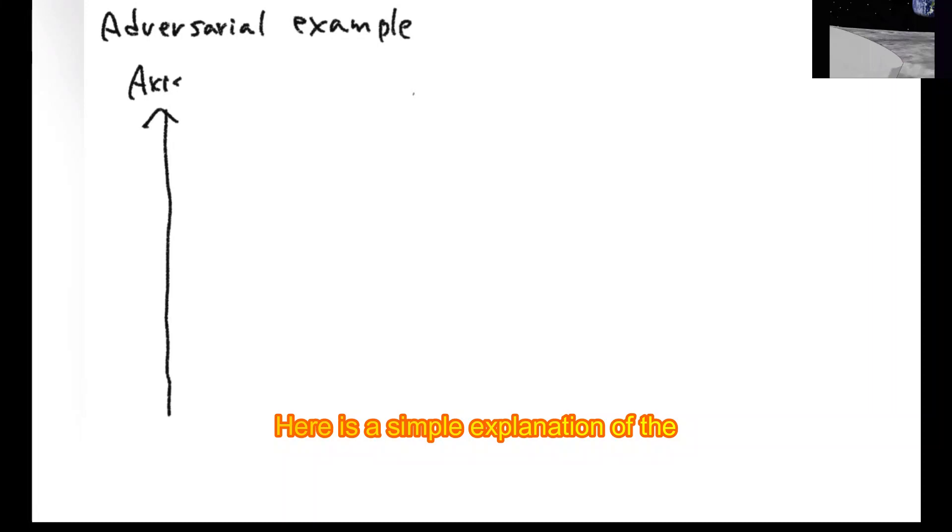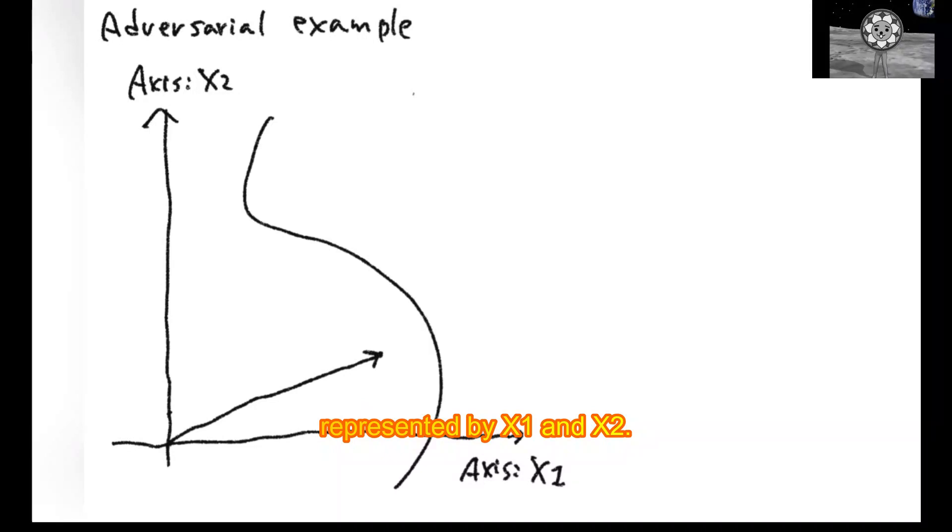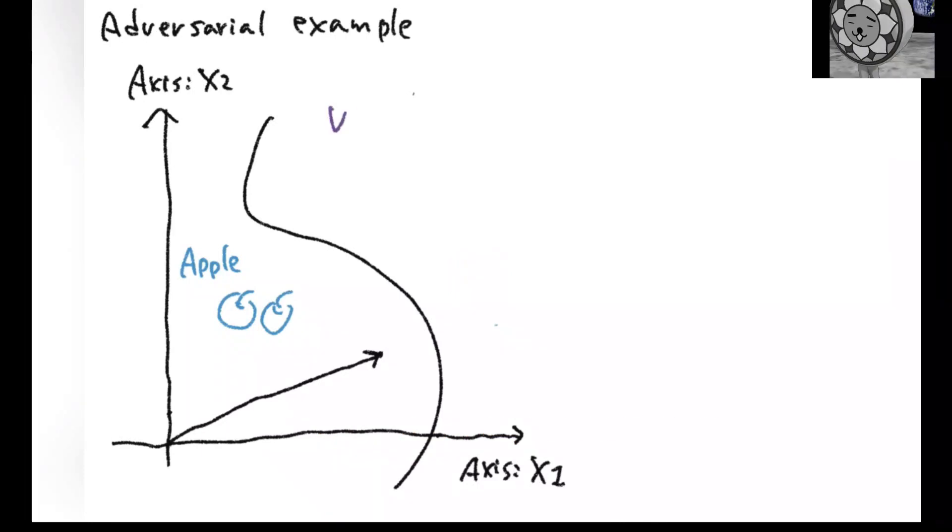Here is a simple explanation of the adversarial sample. Let us assume that images are represented by x1 and x2. The original image is at point (5, 2),